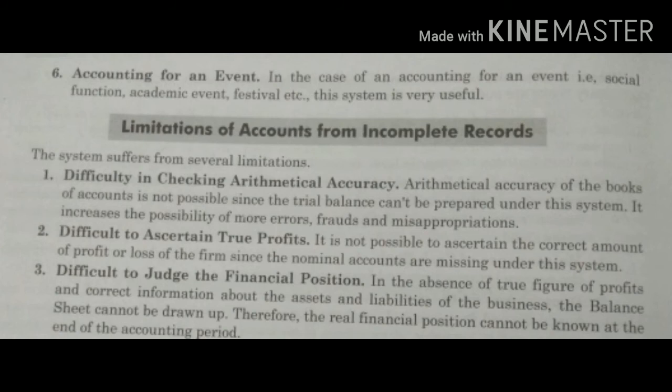Next is limitations of accounts from incomplete records। The very first limitation is difficulty in checking arithmetical accuracy। इसमें हम कोई trial balance नहीं बनाते। हम अपनी convenience के accordingly transactions note करते हैं, तो errors होने, misappropriation होने, fraud होने के chances बहुत ज़ादा होते हैं। Trial balance से arithmetical accuracy का पता लग जाता है, लेकिन यहाँ जब हमने सारी transactions लिखी ही नहीं हैं, तो trial balance बना ही नहीं सकते — गलतियाँ ज़ादा हो सकती हैं।